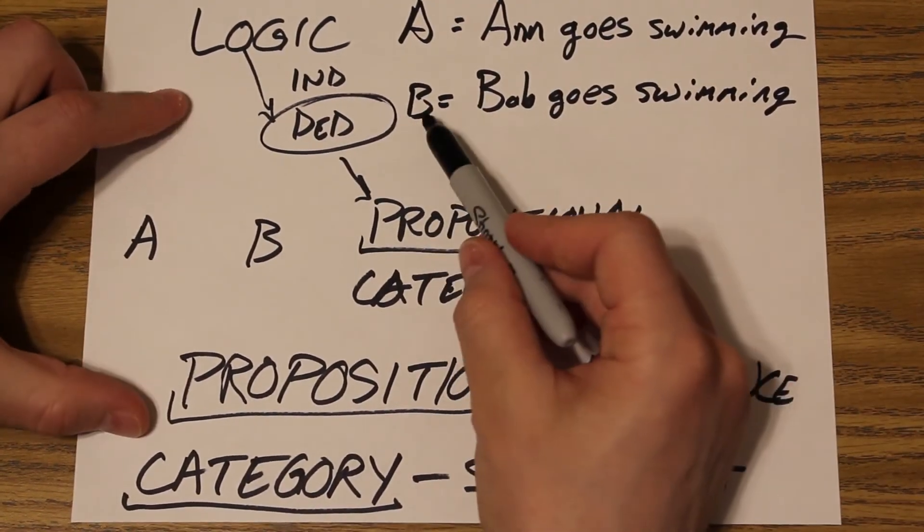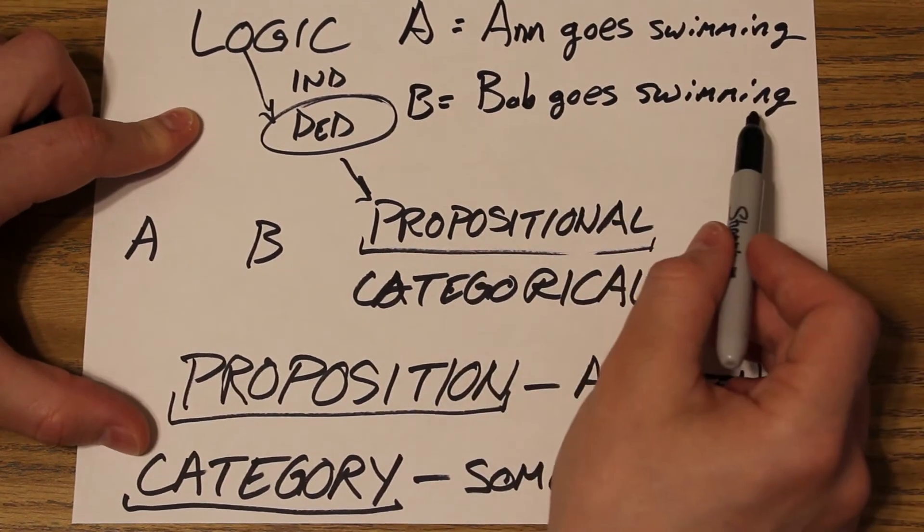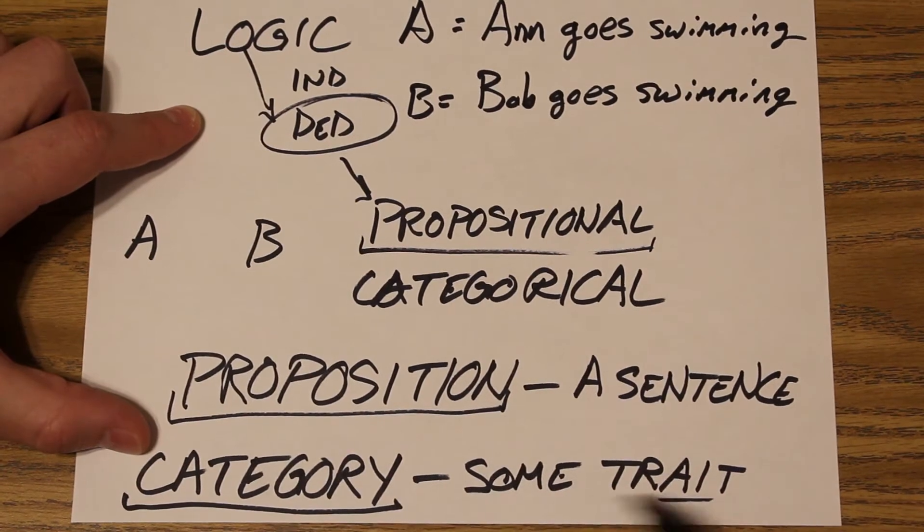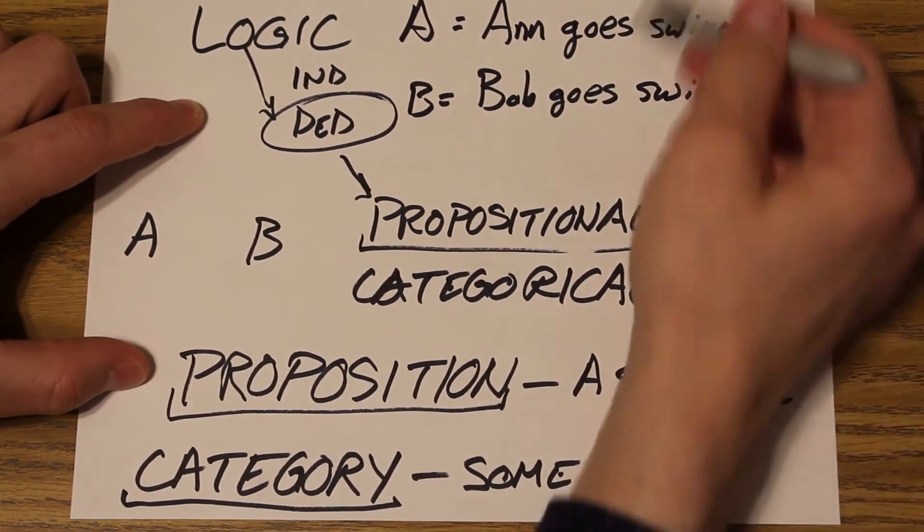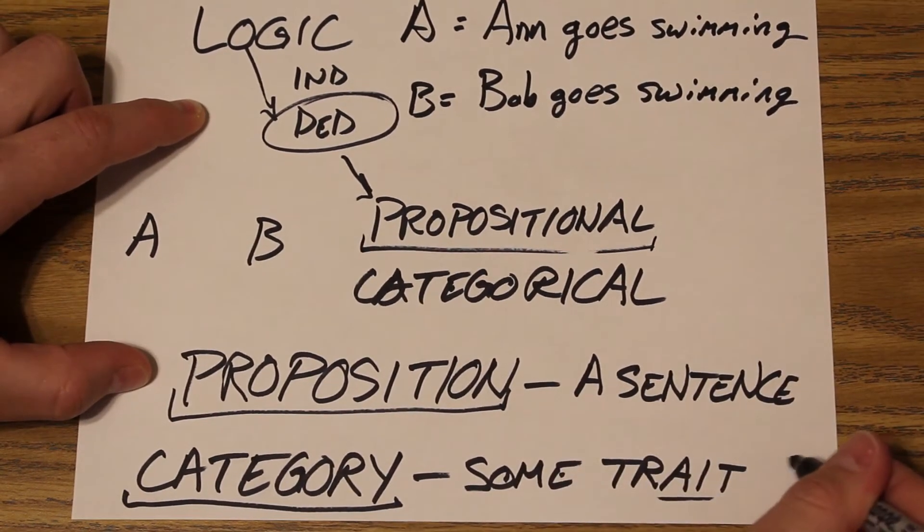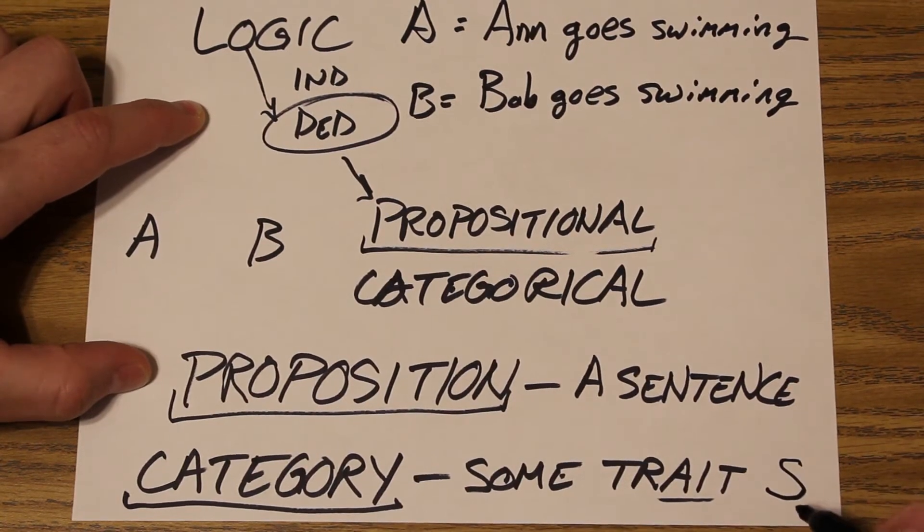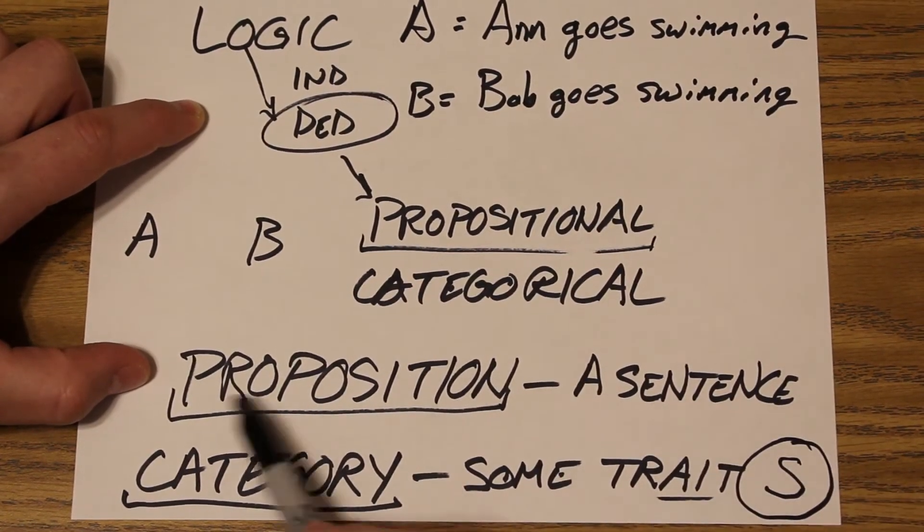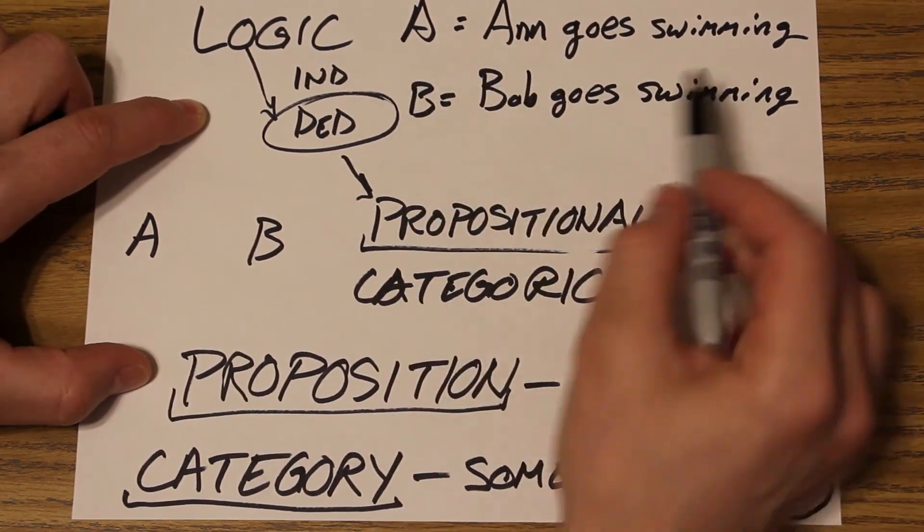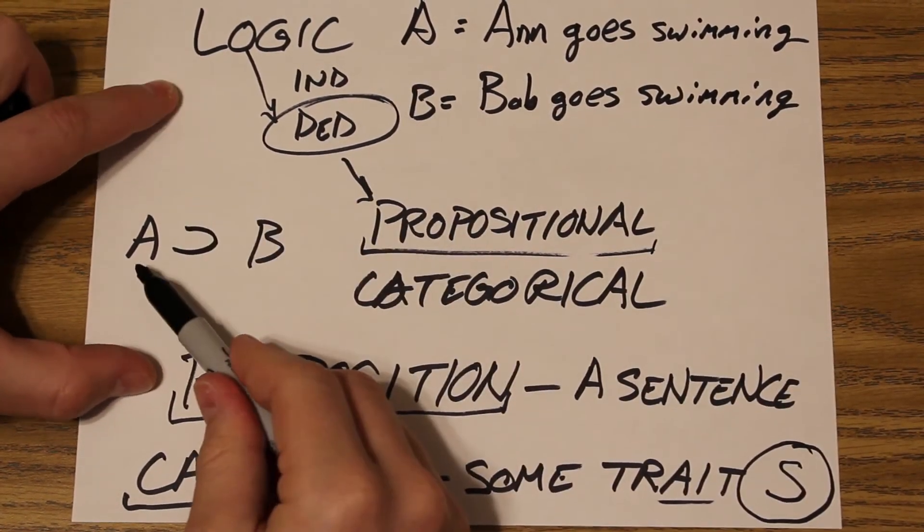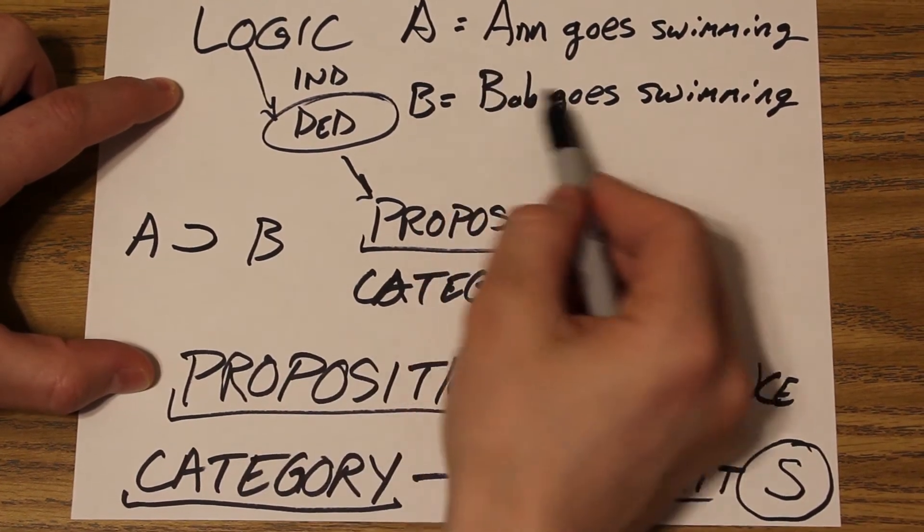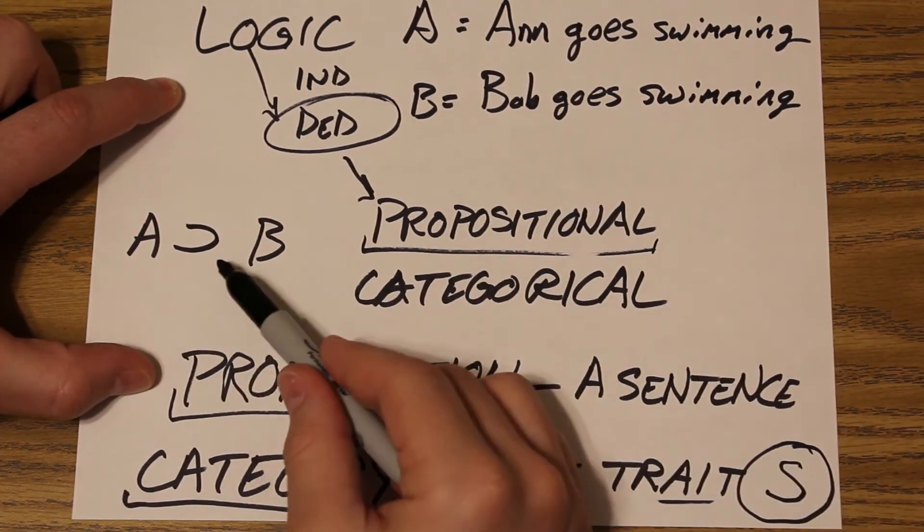So if I connect these two, this is not the category, by the way, of things that go swimming. It's a proposition. If this was a trait of things that go swimming, you might call it S, and then Ann and Bob would be inside that category. But the proposition is the whole sentence. So if it's connected, if Ann goes swimming, then Bob goes swimming, these would be two separate sentences connected by an if-then statement.